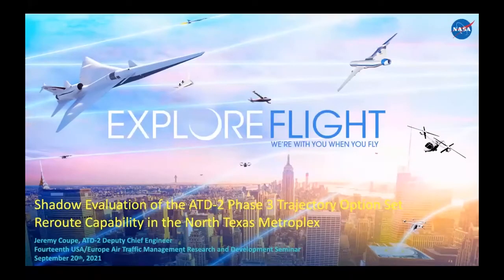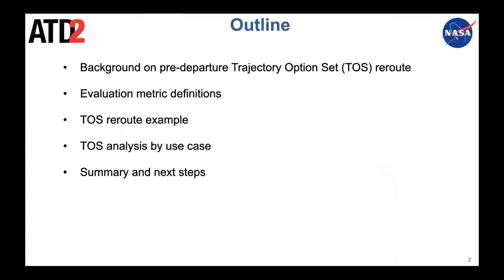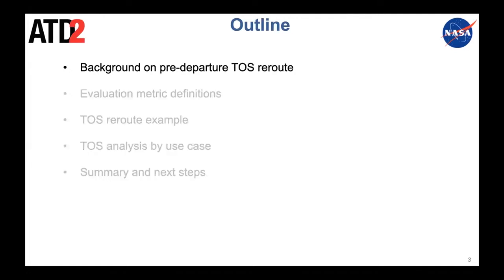Hello everybody. My name is Jeremy Coop, I'm the ATD2 deputy chief engineer. Today we'll be talking about the paper: shadow evaluation of the ATD2 phase three trajectory option set reroute capability in the North Texas Metroplex. The outline is: background on the pre-departure trajectory option set reroute capability — from now on referred to as TOS — then the metrics we use, a deep dive into a specific example, benefits by use case, and finally a summary and next steps.